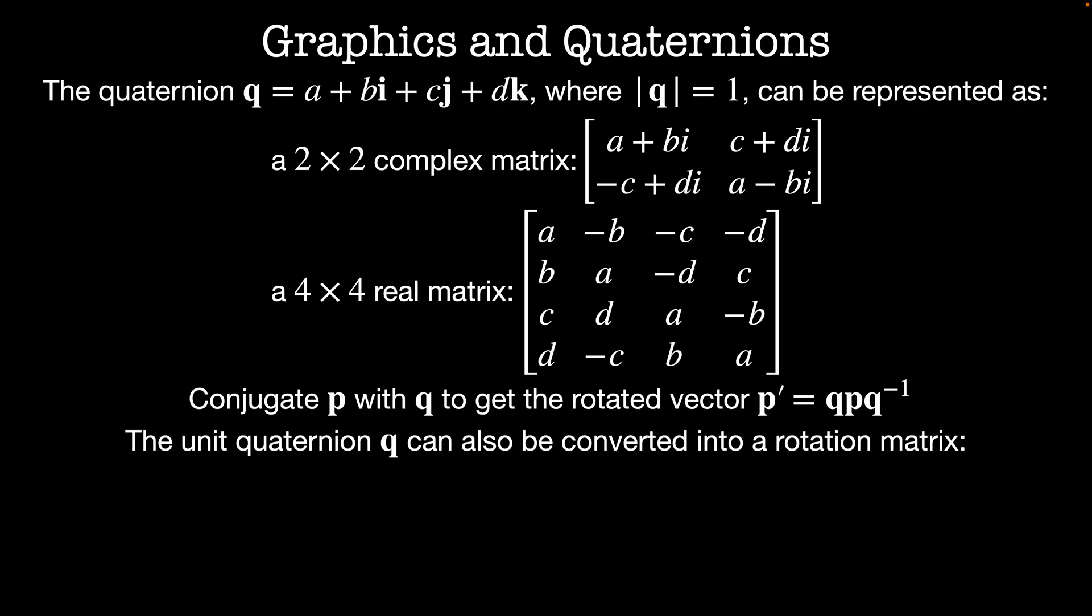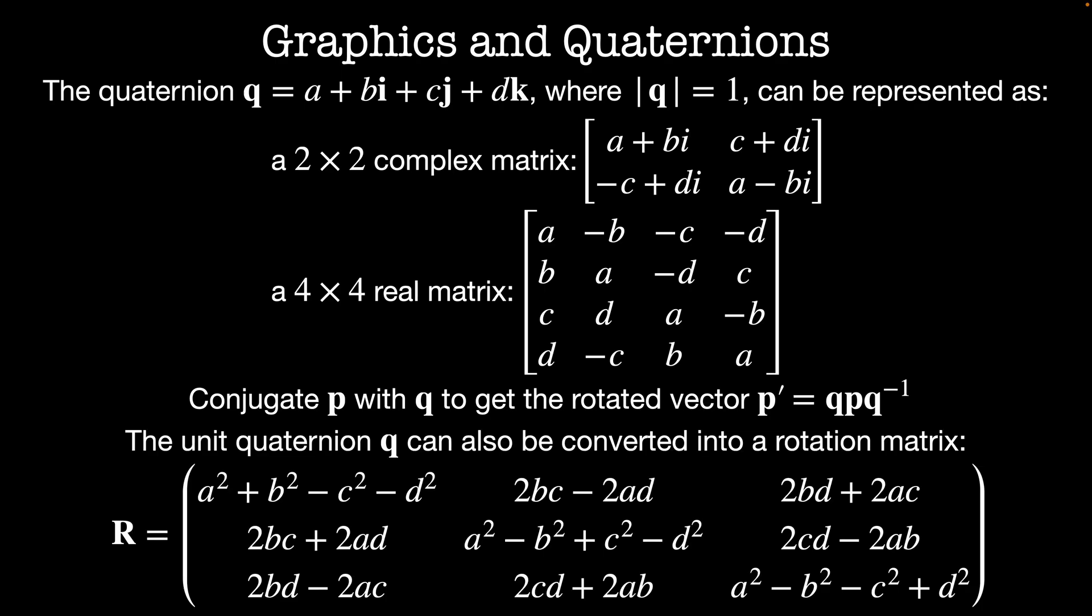Likewise, we can express quaternions as an orthogonal matrix of rotations. It turns out the fact that quaternions are points in S3 also solves the janky interpolation you get with Euler angles. A geodesic path that connects two quaternions in S3 actually is a sensible path in that it minimizes unnecessary rotation.